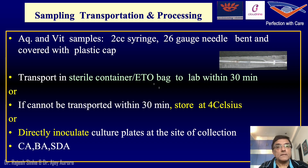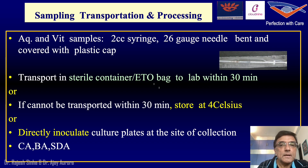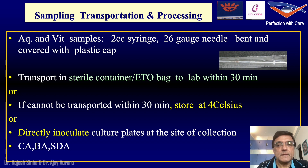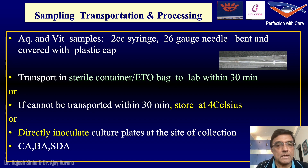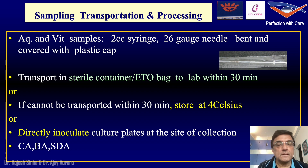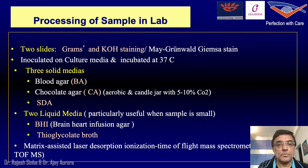Once you have the sample, the simplest way is to cap the needle tip, place it in an ETO bag, and send it to the lab as soon as possible. Or, if you have the option, you could inoculate onto culture plates at the site of collection, which is of course the best way to do it.